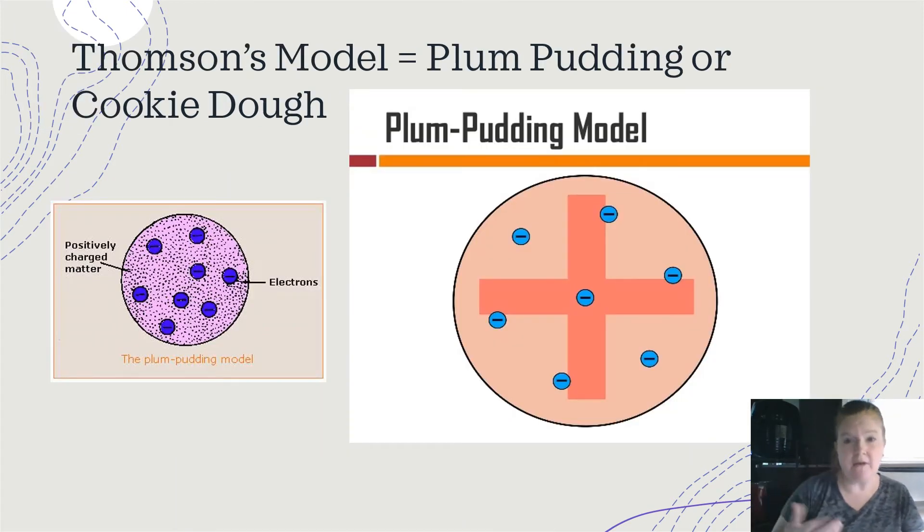Thompson's model was the plum pudding model or the cookie dough model. So it was a ball of positive with these negative charges stuck in it.